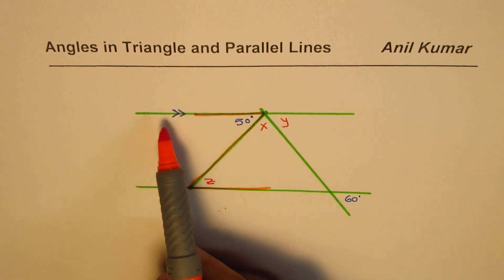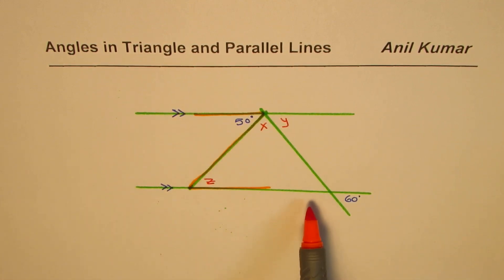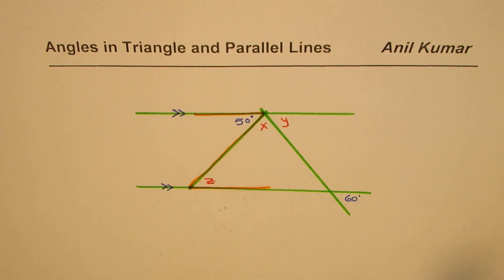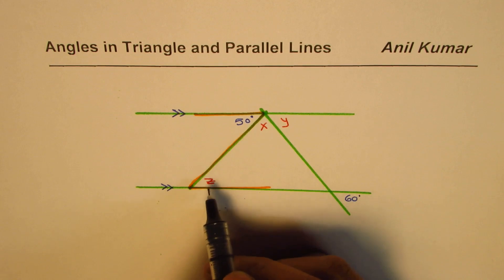Now what we see here is a set of parallel lines and two transverse lines. You can identify a z pattern here, you see that one.